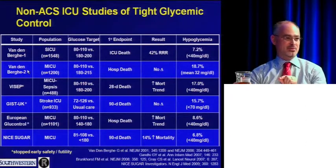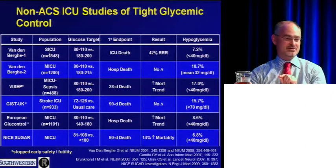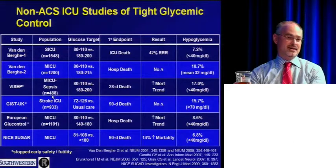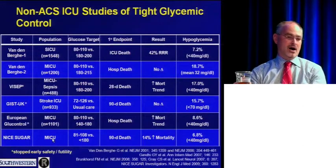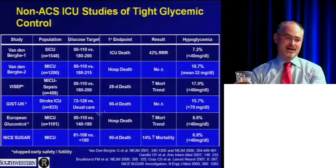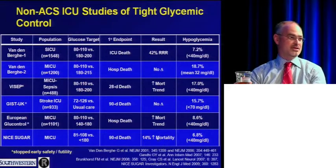Since that one study that changed practice and made guidelines worldwide, we've had a series of negative trials — not just neutral, but trials that killed people. A 1,200-patient MICU trial, a 500-patient MICU trial, a 900-patient stroke trial, and an 1,100-patient MICU trial all randomized patients to normalization of blood glucose versus usual care. All were negative, with either no change or increased mortality — up to a statistically significant 14% increased mortality.